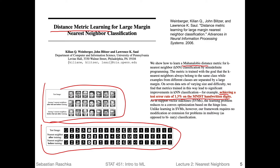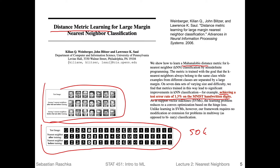That's interesting because we talked about MNIST in the last lecture. MNIST is a relatively classic image classification dataset where the task is to recognize handwritten digits, with around 50,000 training data points. Here's another interesting application: not K nearest neighbor classification, but K nearest neighbor regression.